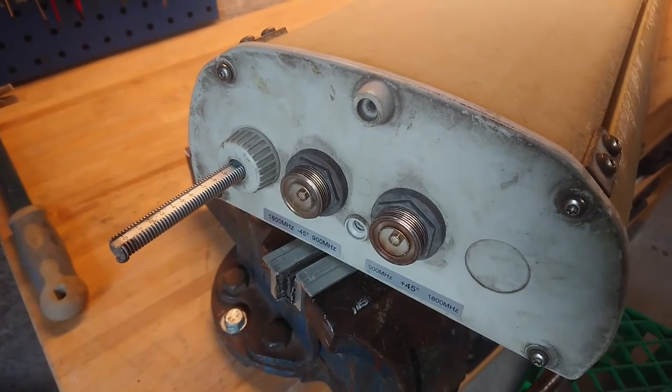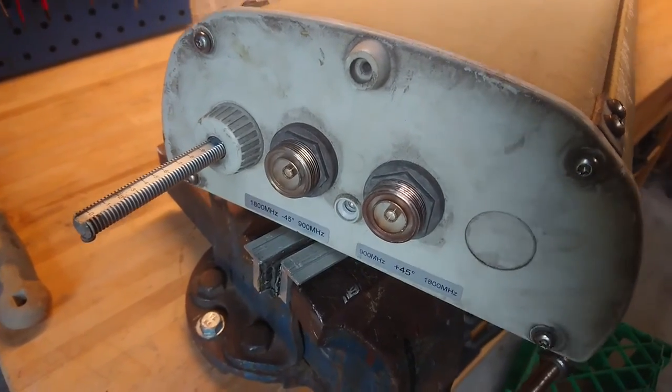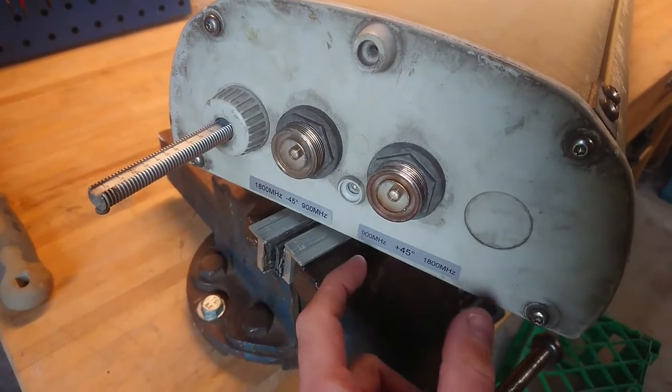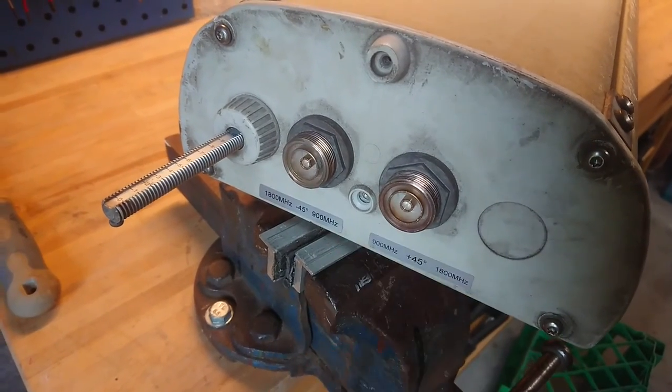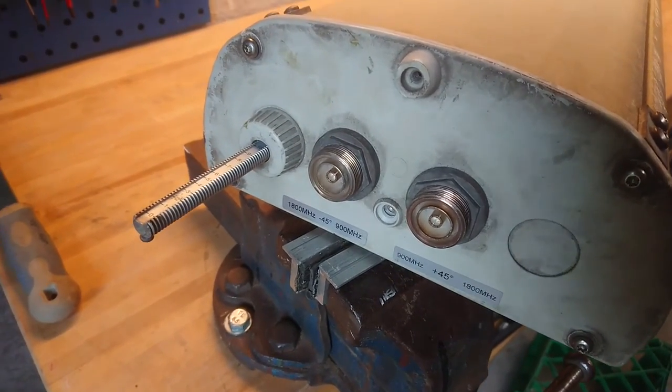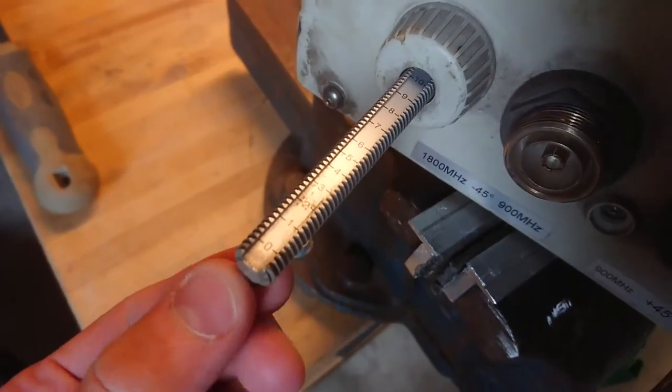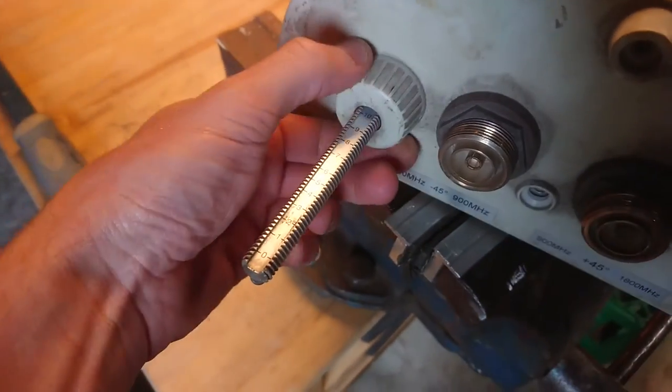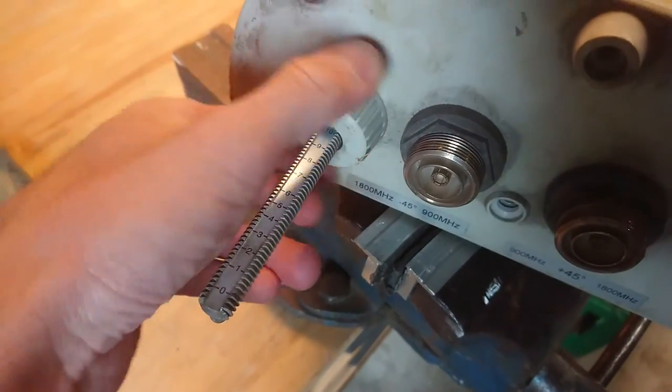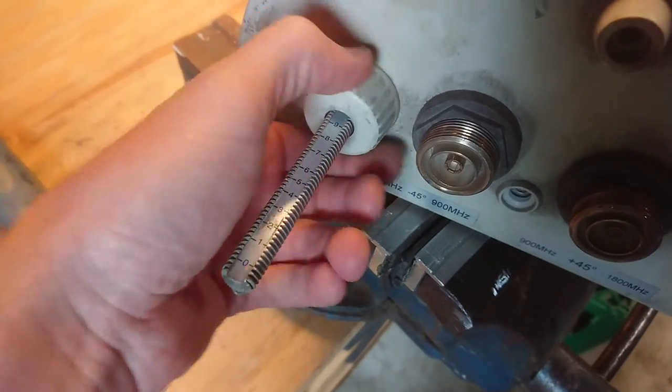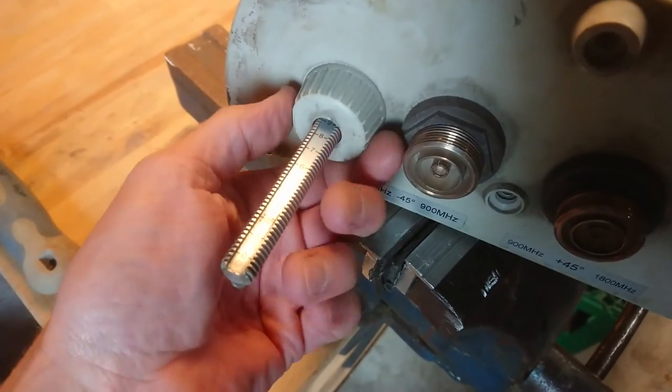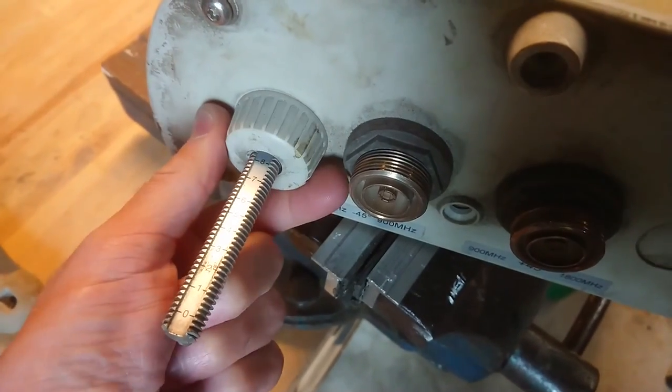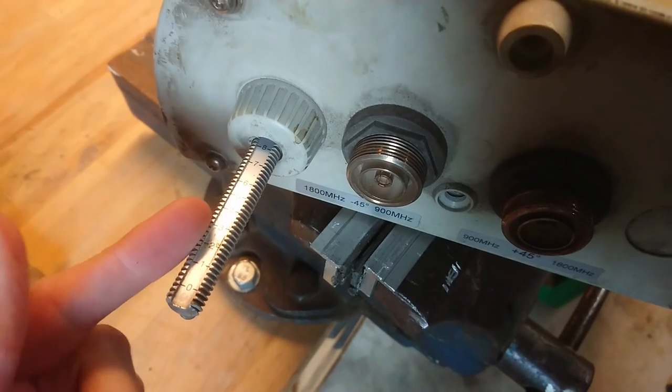Here at the bottom we can see we have the two 7/16 connectors, one for the plus 45 and one for minus 45, and each has both frequencies on the input or output cable here. Now the remote electrical tilt would connect to this rod here. We can see it is marked from 0 to 10 degrees. Well, the 10 degrees was only for the 900 megahertz part and the 1800 megahertz part can only do 0 to 2 degrees of tilt.